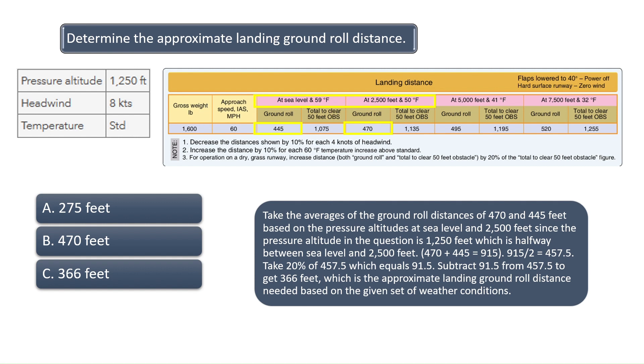Since there are 8 knots of headwind, we need to decrease the distance by 20%, since the chart says to decrease the distances 10% for each 4 knots of headwind. 20% of 457.5 is 91.5, so subtract 91.5 from 457.5 to get the correct answer of 366 feet.